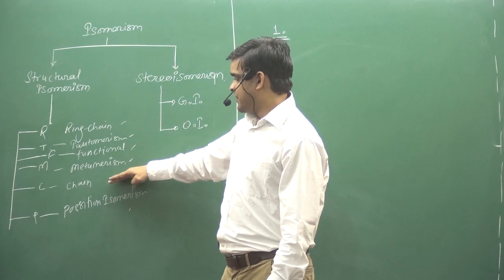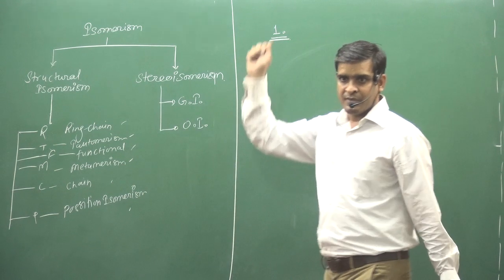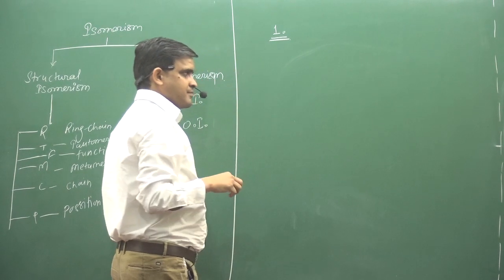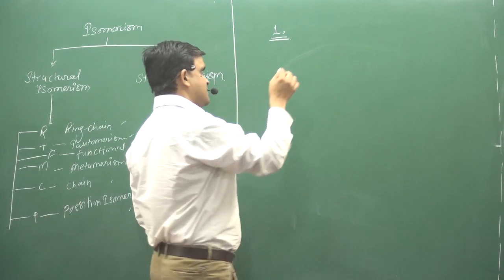So this is priority 1, 2, 3, 4, 5, 6, 7, 8. So no doubt. Number 1, ring chain.